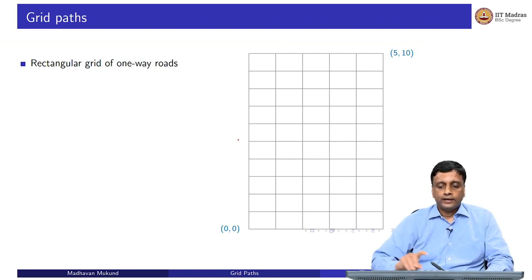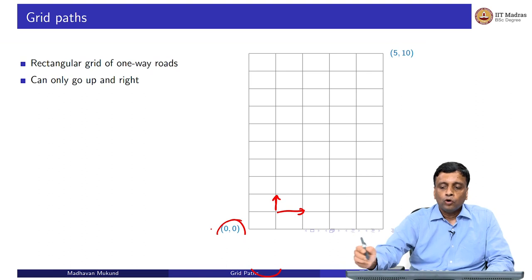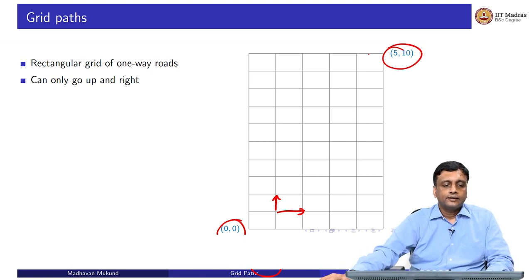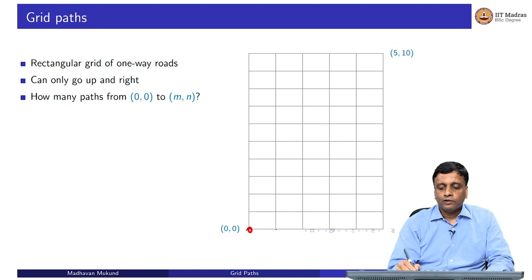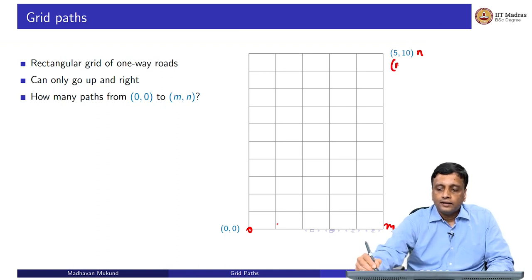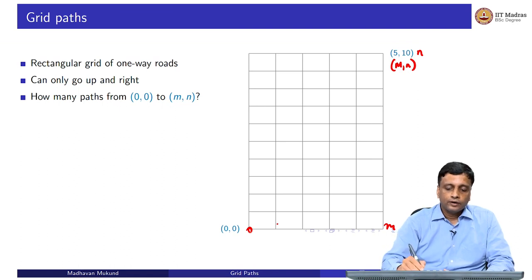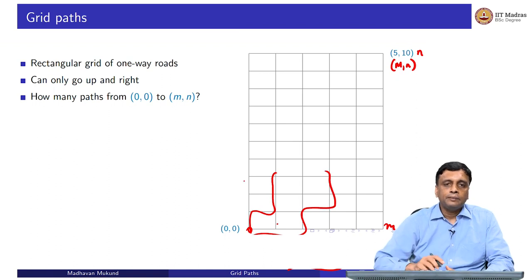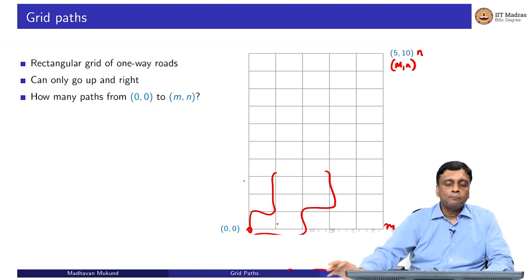Let us assume that these roads are one way — you can either go right or you can go up. You cannot go left, you cannot go down. We start at the beginning and want to reach the top right. The question is: if I start at (0,0), the left bottom corner, and travel m steps sideways and n steps upward to reach corner m comma n, how many different ways are there? These are called grid paths, and it is a very standard problem in combinatorics.